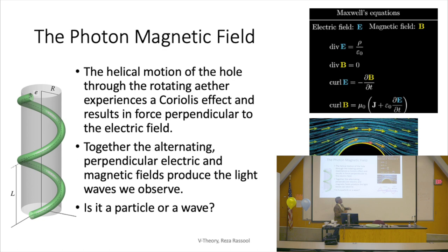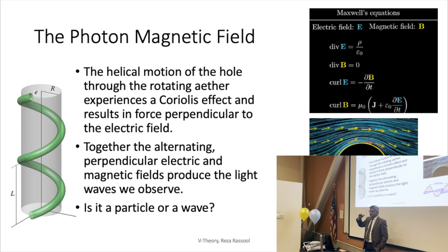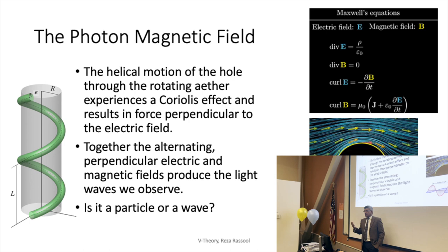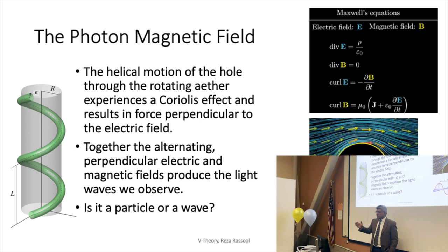It starts encountering its own wake, its own low pressure wake, and so you get an interaction between the electric field and it's it's now gets an acceleration and the acceleration of an electric field by Maxwell's equations results in a magnetic field. And that magnetic field is at 90 degrees by sort of Coriolis effect, 90 degrees to the electric field.